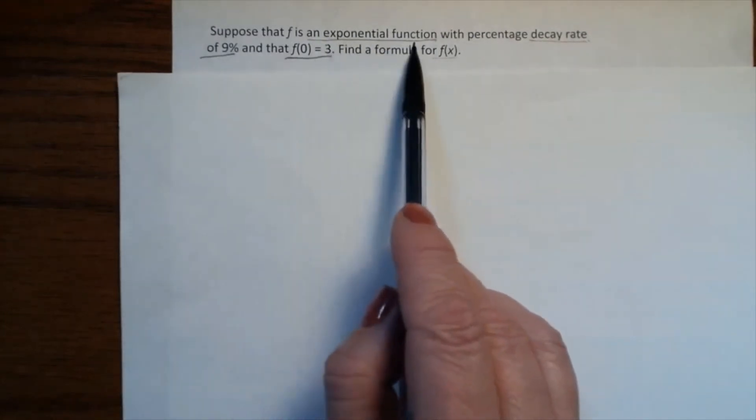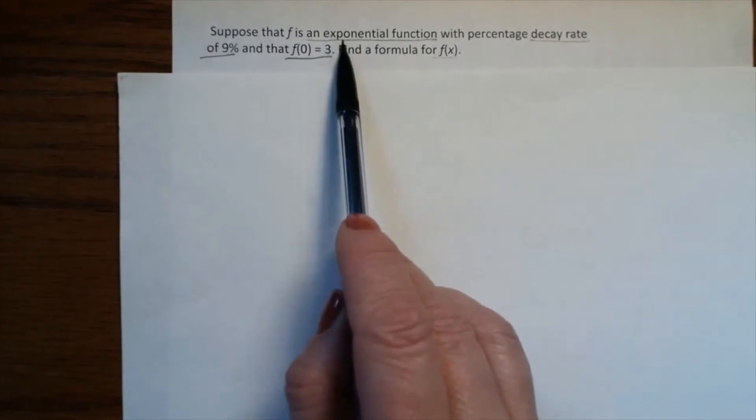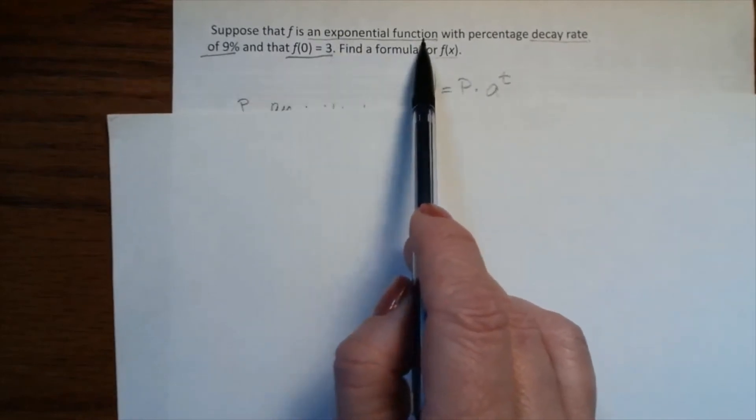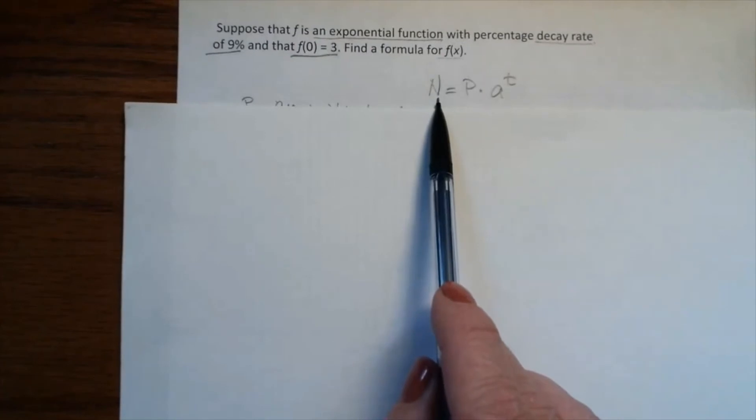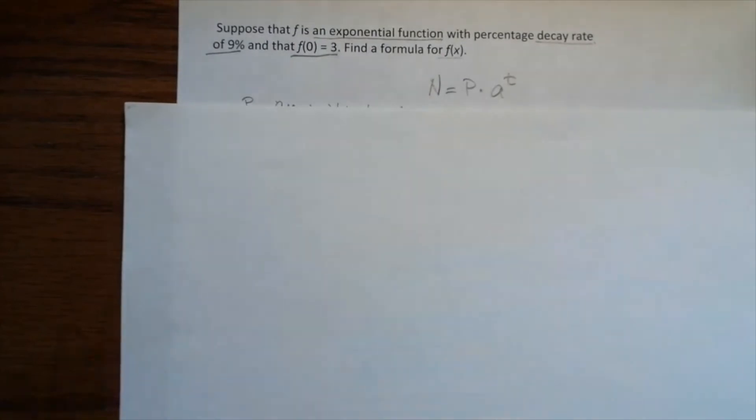We have to read carefully. For an exponential function, we use the formula N = P × a^t.